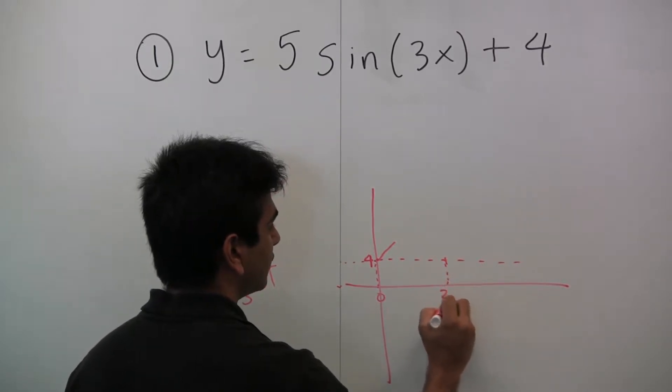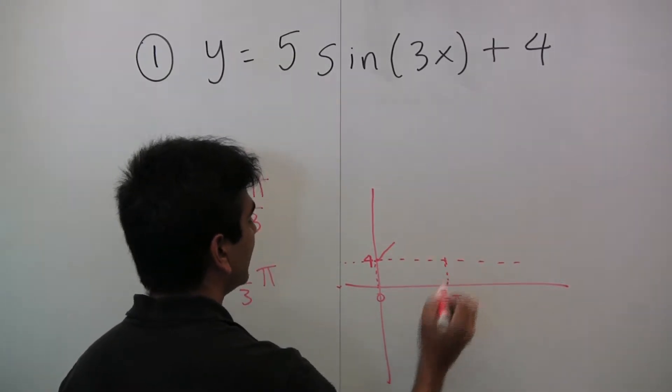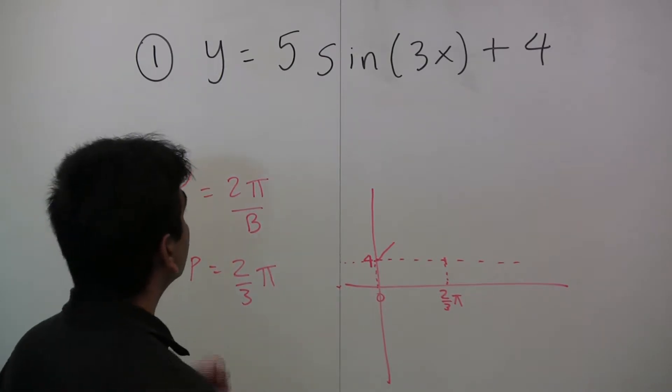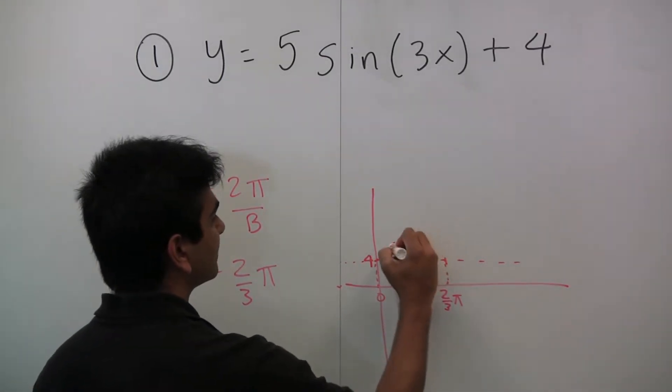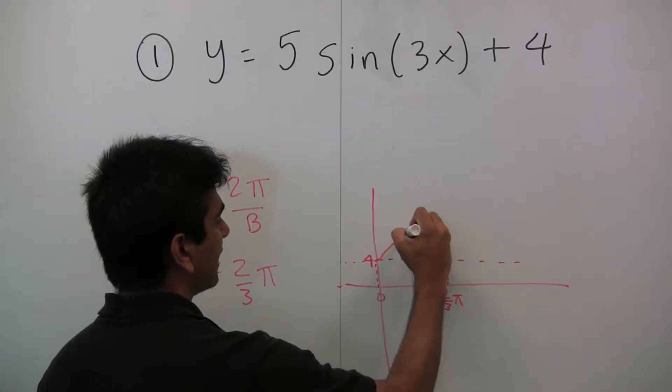When x is 2π/3, it will repeat itself for the first time. Now, a is 5, meaning from the center line, it goes up to 5 units higher and 5 units lower.